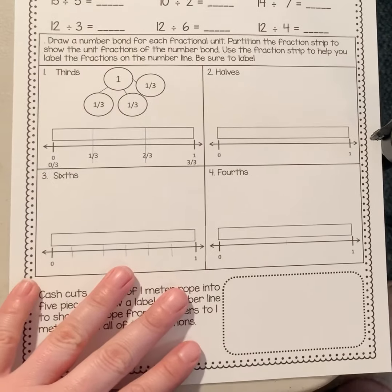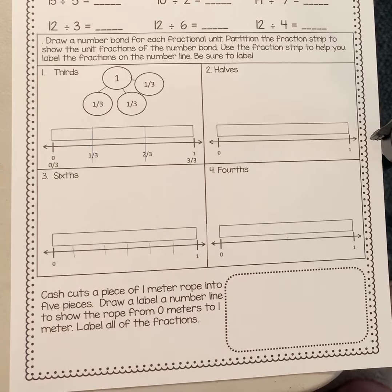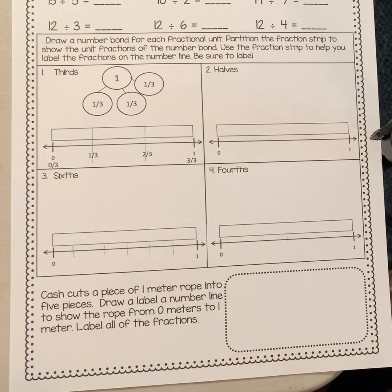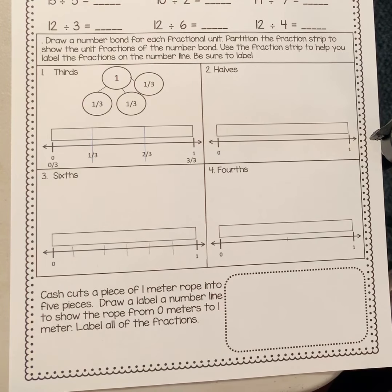We're going to slide on down here to the number bonds and the number lines. So today what we're asking you to do is we're drawing a number bond for each fractional unit, then we're partitioning the fractional strip to show the unit fractions of the number bond. Then we're going to use the fraction strip to label the fractions on a number line, and we're going to make sure everything gets labeled nice and clearly.